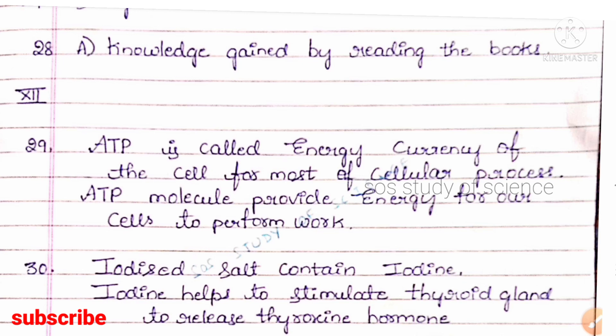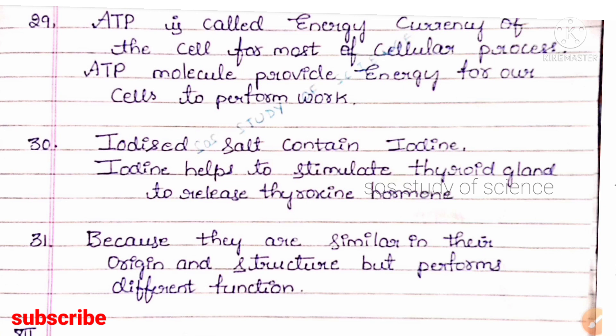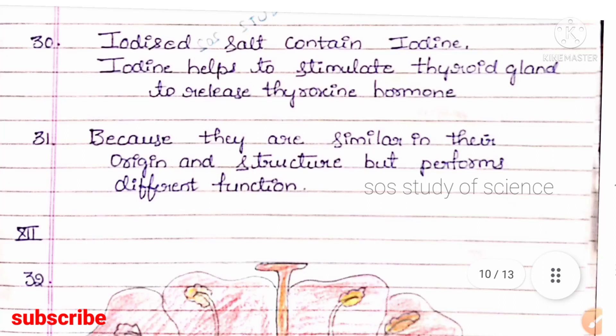Question 30: iodized salt contains iodine; iodine helps to stimulate the thyroid gland, which releases thyroxine hormone, responsible for the metabolism of the overall body. Question 31: the forelimbs of birds and forelimbs of humans are homologous organs because they are similar in structure and origin, but their function is different.